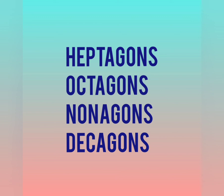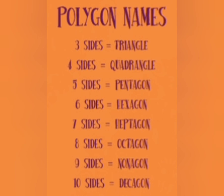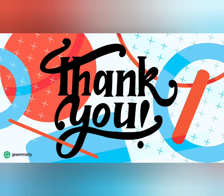Heptagons, seven-sided shapes. Octagons - you can easily remember the octopus, which has eight legs. So, it is eight-sided shapes. Nonagons has nine-sided shape, and decagon is a ten-sided shape. Thank you for watching.